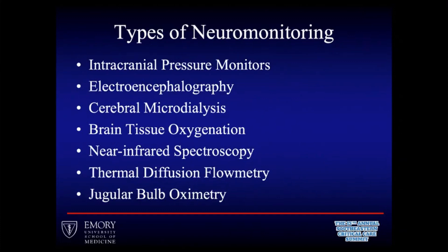Ways we achieve those: traditional intracranial pressure monitoring, EEG which is really helpful especially intracranially, cerebral microdialysis for metabolic demand at the cellular level, and brain tissue oxygenation. The other three — NIRS infrared spectroscopy, which we're running a trial at UH currently; thermal diffusion flowmetry; and jugular bulb oximetry — are either not ready for prime time or not used for a variety of reasons.